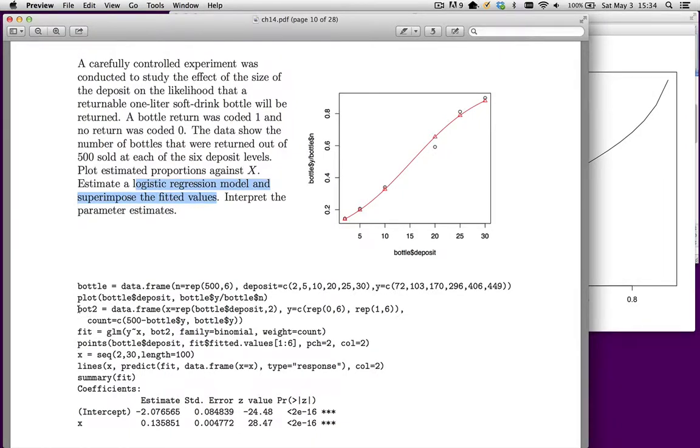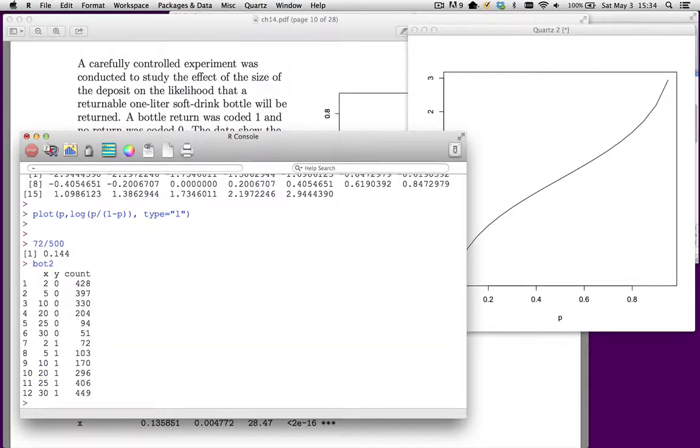I have to make another version of the data set. That's what this does. And if we go look at that data set, bot 2, then has, it's just slightly different format. So consider a 2 cent deposit. Clearly, this is what was given to us. There were 72 bottles that were returned at 2 cents. So that's what that row does. If there were 72 bottles that were returned, that what that means is there were 428 bottles. So 500 minus 72 that never came back. So that's what that observation is. At 5 cents, there were 103 that came back, or 397 that didn't come back. So that's what the data set looks like.